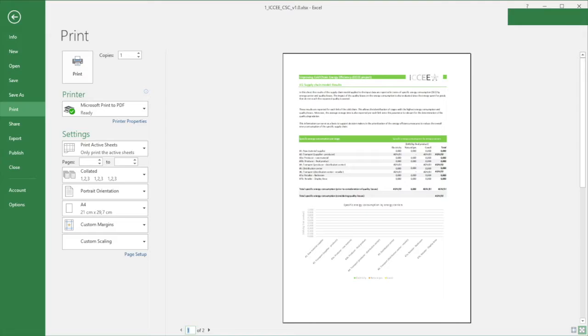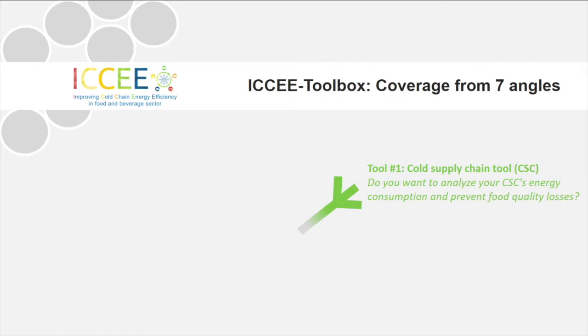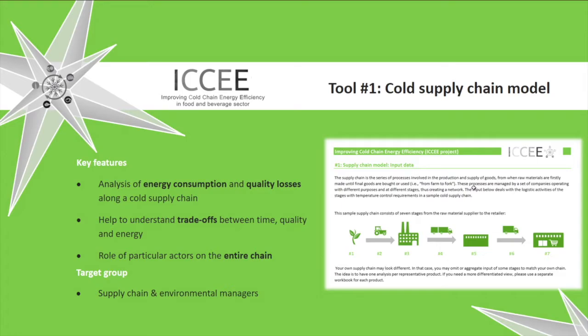After this general introduction to the sheets, let's get back to the toolbox. The different tools are intended to help address energy efficiency from different perspectives. The first tool is the cold supply chain tool. Its aim is to help you understand and minimize the overall specific energy consumption along cold supply chains, by analyzing energy requirements in storage and transport activities, and time-temperature effects on food quality and the resulting energy consumption. Its target group are supply chain and environmental managers interested in the energy and environmental performance of their cold supply chains.